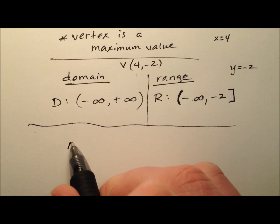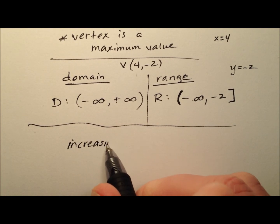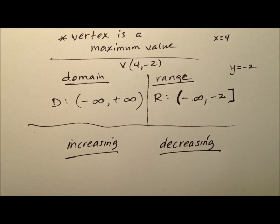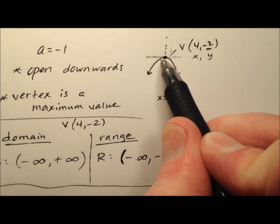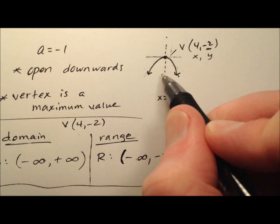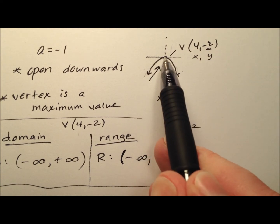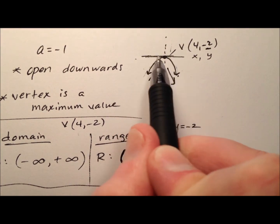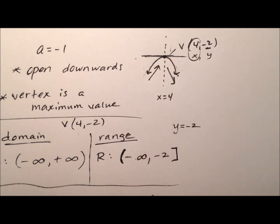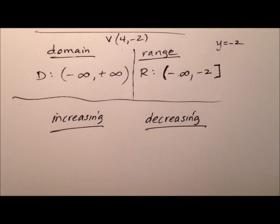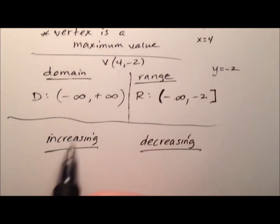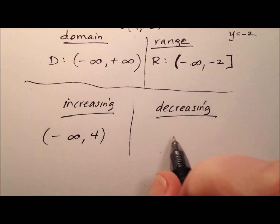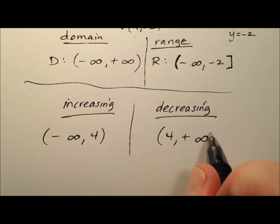The last thing we're going to talk about: on what intervals is the graph increasing, and on what intervals is it decreasing? Since the parabola opens downward, it's going to be increasing to the left of our vertex and decreasing to the right of our vertex, with respect to the x value — which is 4. So the function is increasing from negative infinity up to 4.